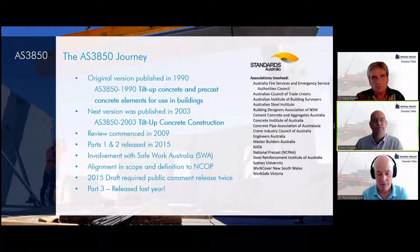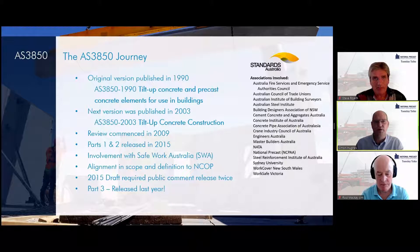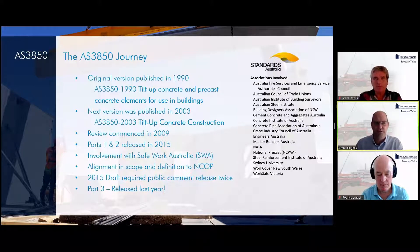A brief history of how AS3850 has evolved over the years. This is not the first version of AS3850. The original version was released in 1990 and was primarily focused on precast and tilt-up factory wall panels. In 2003, an updated version was released; however, this was specifically written around the use of tilt-up panels only, and for many years became the default standard for not only all precast panel projects but also precast structure projects, as there was no other local standard available.